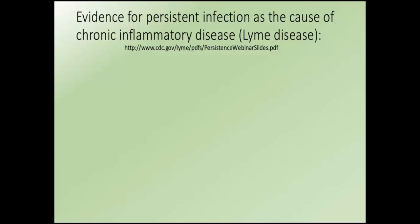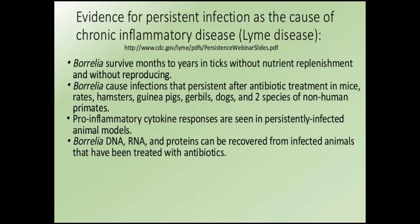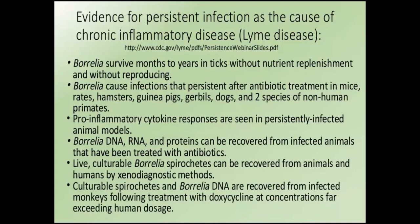Both NIH-supported and privately supported researchers — human and veterinarian — were convened. The available research shows the following: Borrelia can survive for months to years in ticks without any nutrient replenishment, remaining dormant without reproducing. Borrelia causes infections that persist after antibiotic treatment in a variety of different animals — mice, rats, hamsters, guinea pigs, dogs, and two different species of non-human primates, which are considered the best models of human disease.